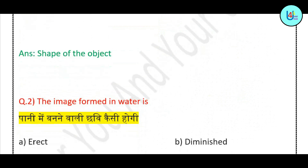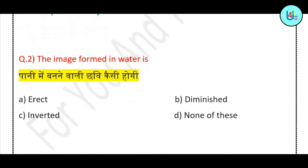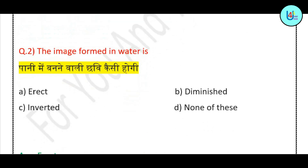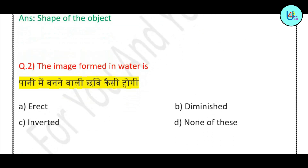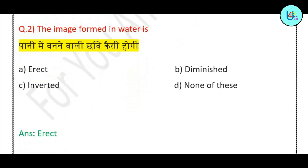Question number 2: The image formed in water is — erect, diminished, inverted, or none of these? Correct answer is: erect.